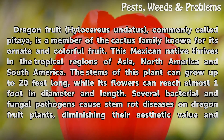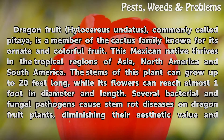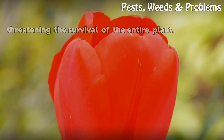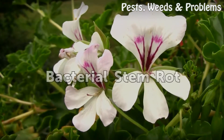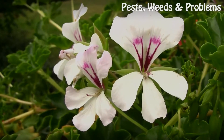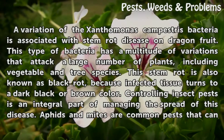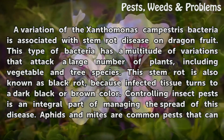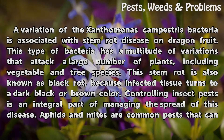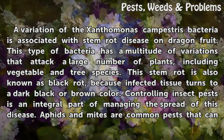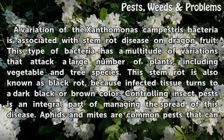Several bacterial and fungal pathogens cause stem rot diseases on dragon fruit plants, diminishing their aesthetic value and threatening the survival of the entire plant. A variation of the Xanthomonas campestris bacteria is associated with stem rot disease on dragon fruit. This type of bacteria has a multitude of variations that attack a large number of plants, including vegetable and tree species. This stem rot is also known as black rot because infected tissue turns to a dark black or brown color.